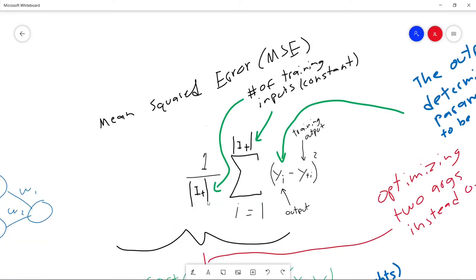And of course, the goal of gradient descent as a whole is to find the arguments of the loss function, or the weights that minimize the output.